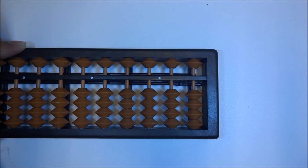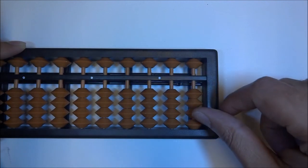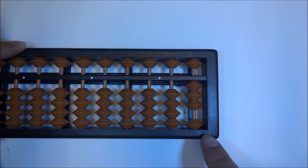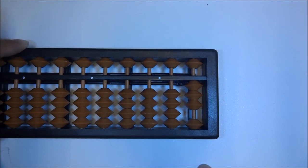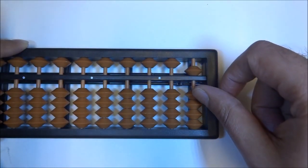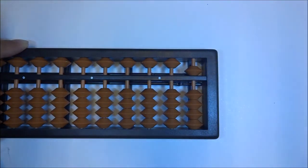Let's redo it one more time. 3 plus 2. So up 3. We need to do up 2. But again, we don't have enough earthly beads. So by finding, or we already know, the little friend of 2 is 3. So we're going to move up 5 and move down the little friend, which is 3. And we have the answer, 5.